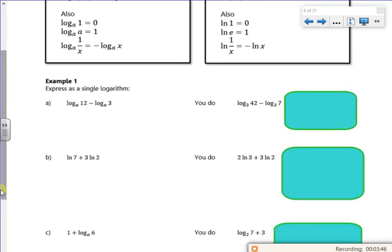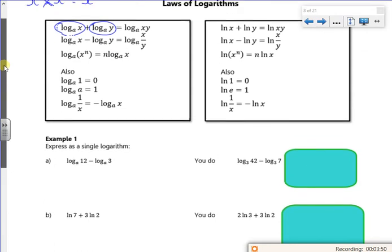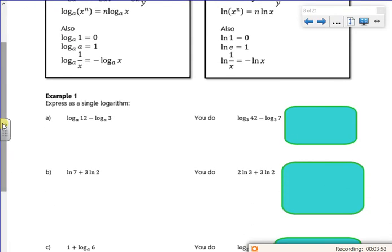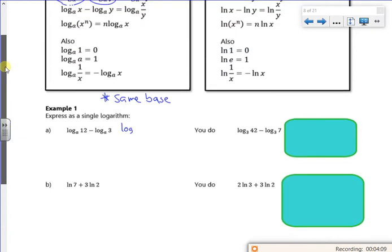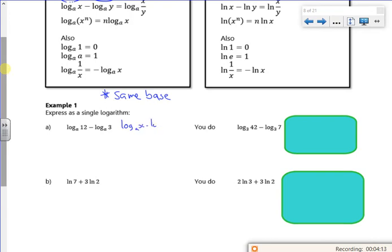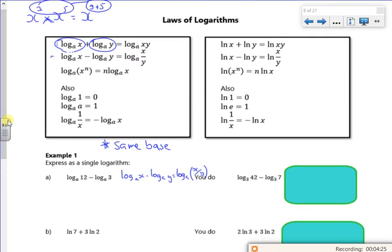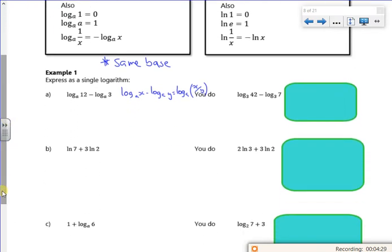Let's have a look at this then. Now what's important is they have to be the same base. And if you look, these are log a, so that's fine. So I'm going to use the log a of x minus log a of y is log a of x over y. So I'm using the divide one here. So that's the same. So I'm minusing this. It's the same as log to base a of 12 over 3. So that's going to give me a log to base a of 4.